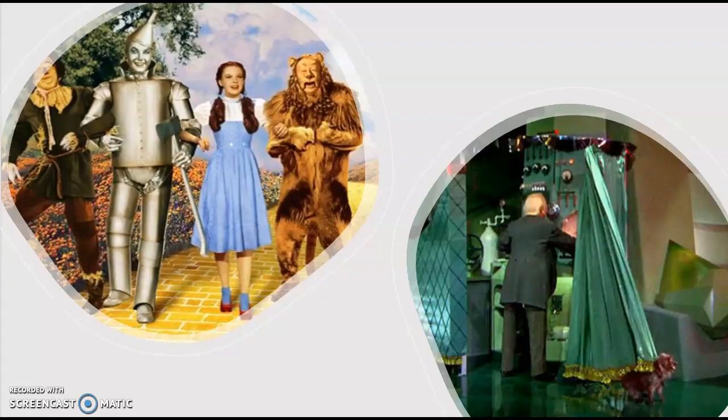Quick refresher on The Wizard of Oz if you've never seen it: it's the story of Dorothy, who is the sort of everyman — an allegory for the everyman in the United States at this time in history. Dorothy finds herself, due to a tornado, in a fantastical land full of munchkins and witches, and she needs to find her way home. She hears that there is a wizard in a place called Oz, and she decides she's going to get to Oz.